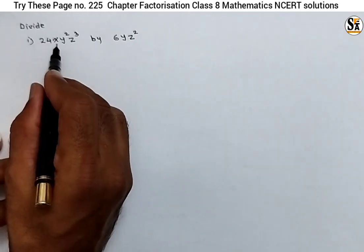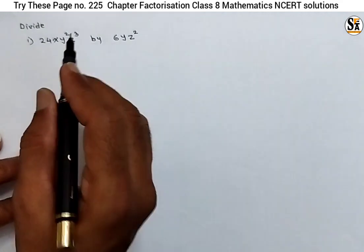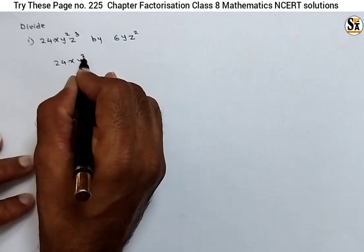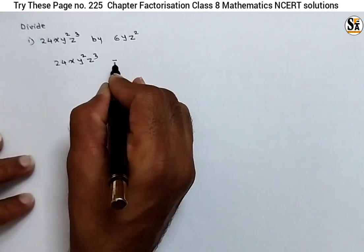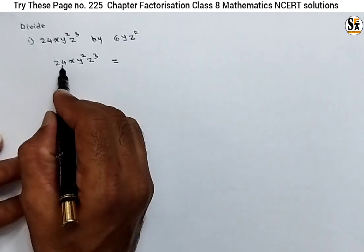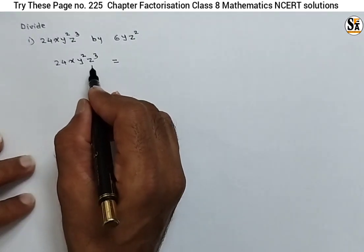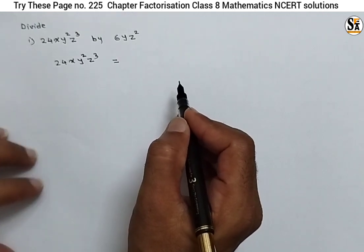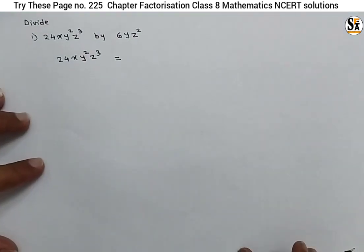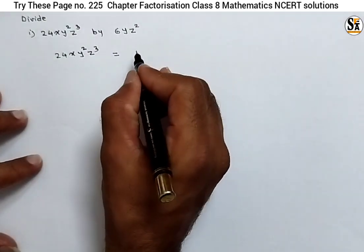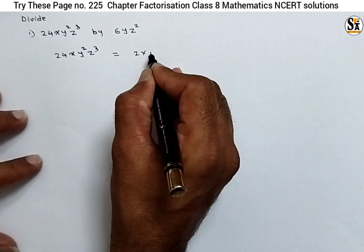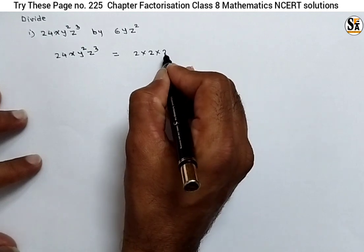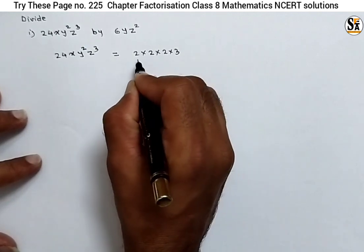The first expression is 24x·y²·z³. Let's factorize that expression: 24x·y²·z³. Factors are — we have to find the prime factors of the number and irreducible factors of the algebraic expressions, meaning factors that cannot be further divided. For 24, the factors are: 24 can be written as 2×12, and 12 as 2×6, and 6 as 2×3. These are the prime factors of 24.